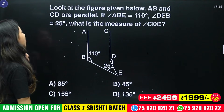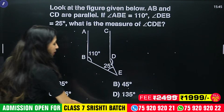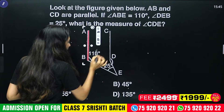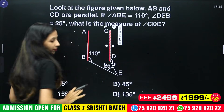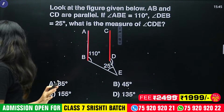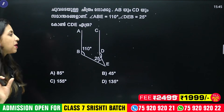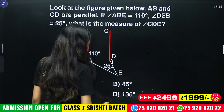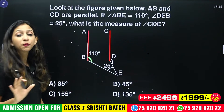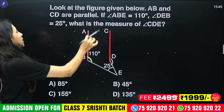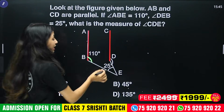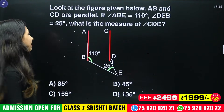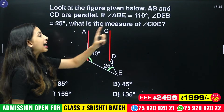As you can see, the figures are parallel. A and C are parallel lines. The other line is called B, and the C lines are called C. The two lines are parallel. C is parallel. The angle AB is about 110 degrees. This angle is about 110 degrees, and the angle of DEB is 25 degrees. What is the measure of CDE?